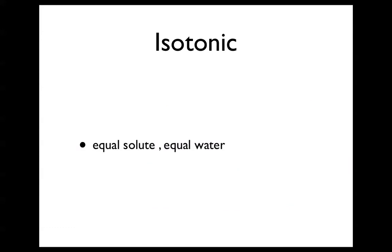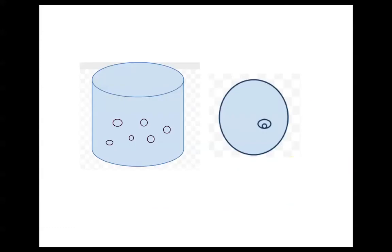First of all, isotonic solution has equal solute and equal water. This is how it looks — a cell has no problem in this solution. It doesn't shrivel, nor does it burst.